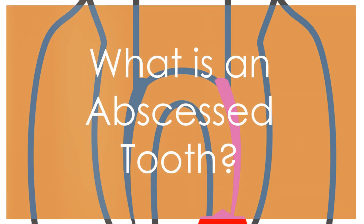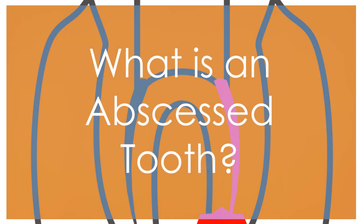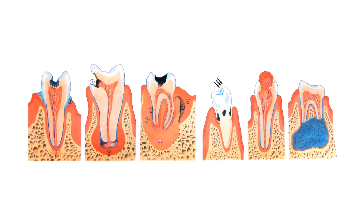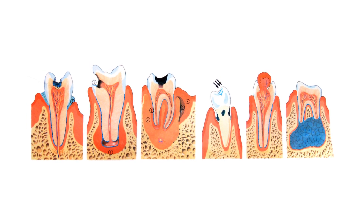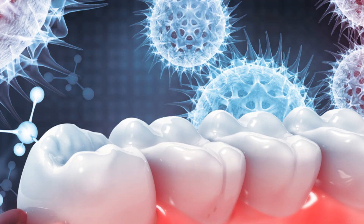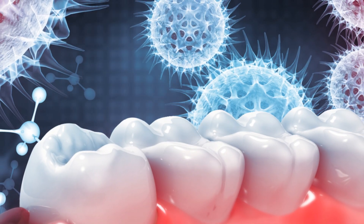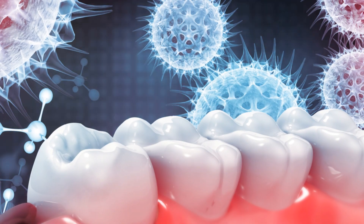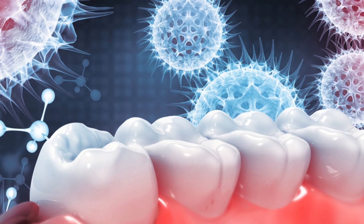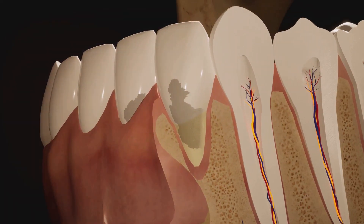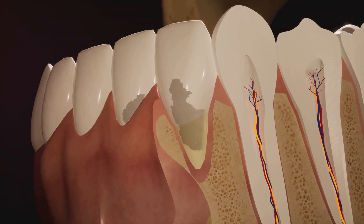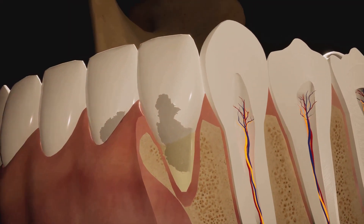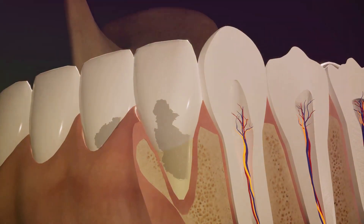Thank you for joining me. I hope the information I provide will be of use. What exactly is an abscessed tooth? It's a painful dental condition caused by a bacterial infection resulting in a pocket of pus. This infection can occur in different parts of the tooth, either at the tip of the root or in the gum.